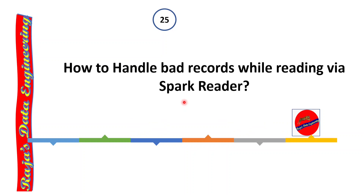How to handle bad records while reading via Spark reader? Whenever we read data from big data file formats such as CSV, Parquet, or JSON, we can handle bad records using the mode option. There are three types of bad record handling: permissive — allows corrupted records through; drop malformed — removes corrupted records and continues processing; and fail fast — fails the entire process as soon as a corrupted record is encountered.